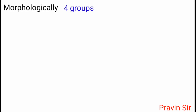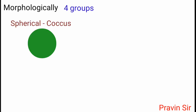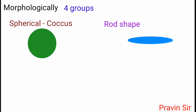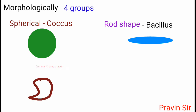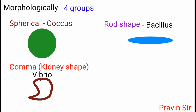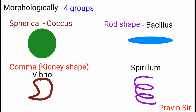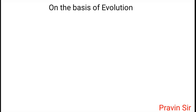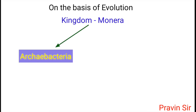Morphologically, bacteria are categorized into four groups: spherical, that is coccus; rod-shaped, called bacillus; comma or kidney-shaped, called vibrio; and spirally arranged, called spirillum. On the basis of evolution, Kingdom Monera is classified into archaebacteria and eubacteria.